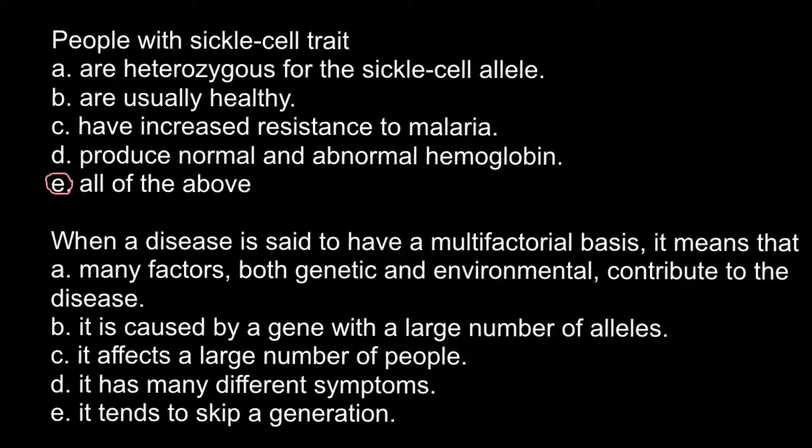Tends to skip a generation — usually we can find that when we deal with simple Mendelian genetics, where one allele is dominant and another one is recessive. When we have two homozygous parents and cross them, in the first F1 generation we would see only one trait with the dominant phenotype, and in the F2 generation we may see reappearance of the recessive trait. So this is not the correct answer.